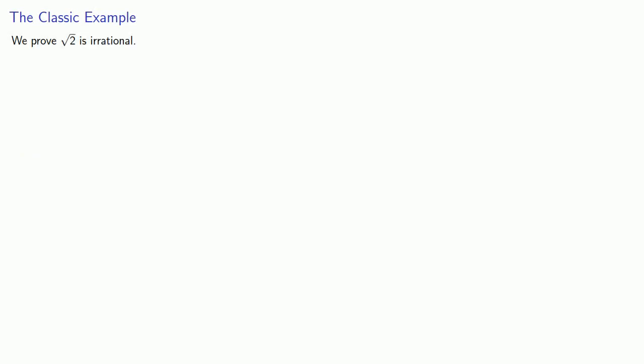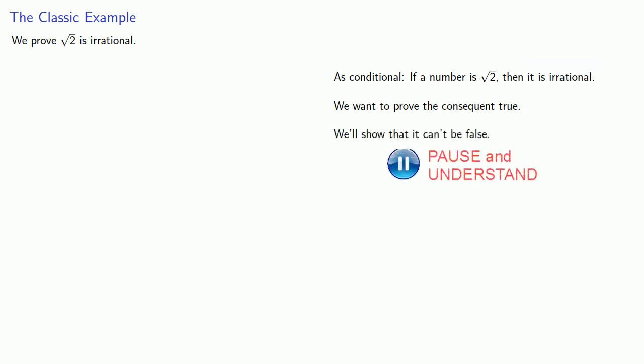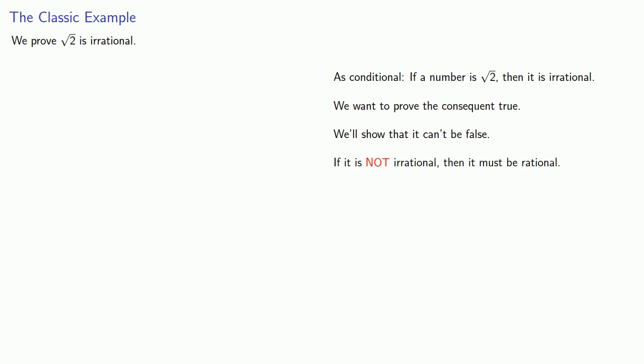The classical example of a proof by contradiction is the following: we're going to prove that the square root of 2 is irrational. Let's start by rewriting our statement as a conditional: if a number is the square root of 2, then it's irrational. We can always assume the antecedent, so we have a number equal to the square root of 2. We want to prove the consequent is true — that the number is irrational — and we'll do that by showing it can't be false. So if it's not irrational, then it must be rational.